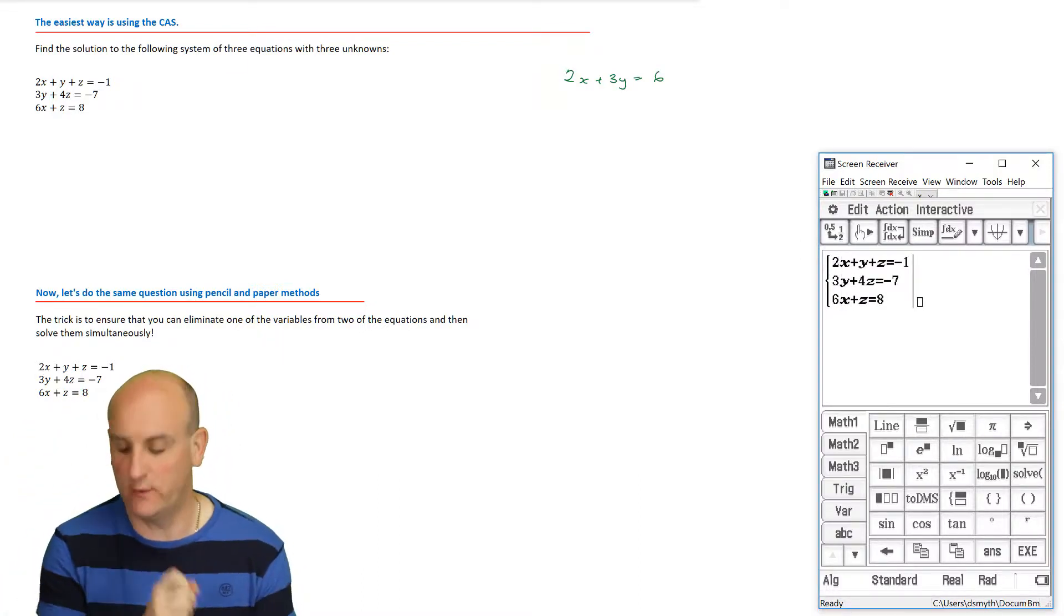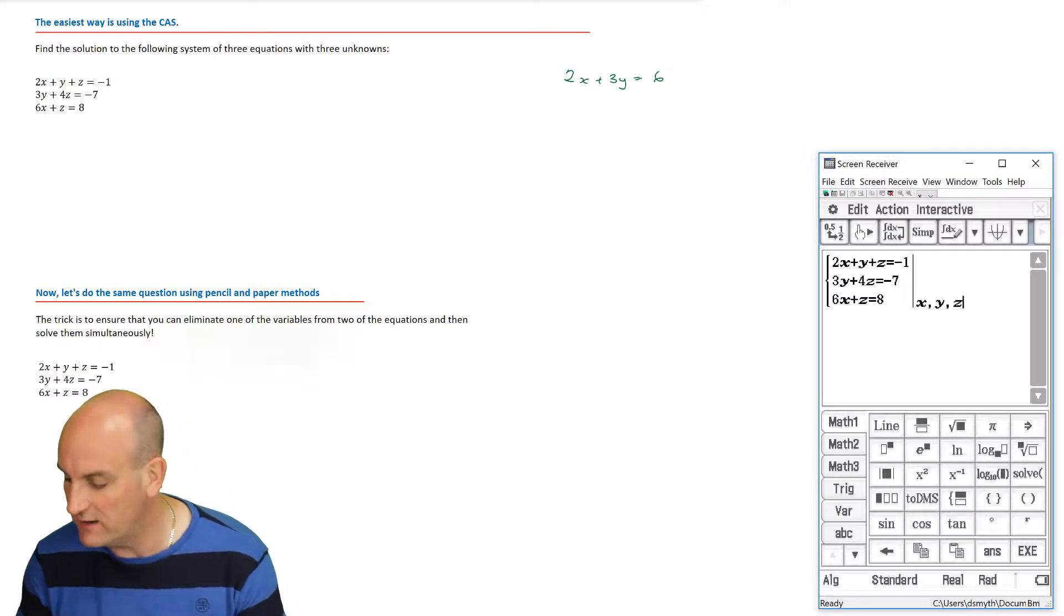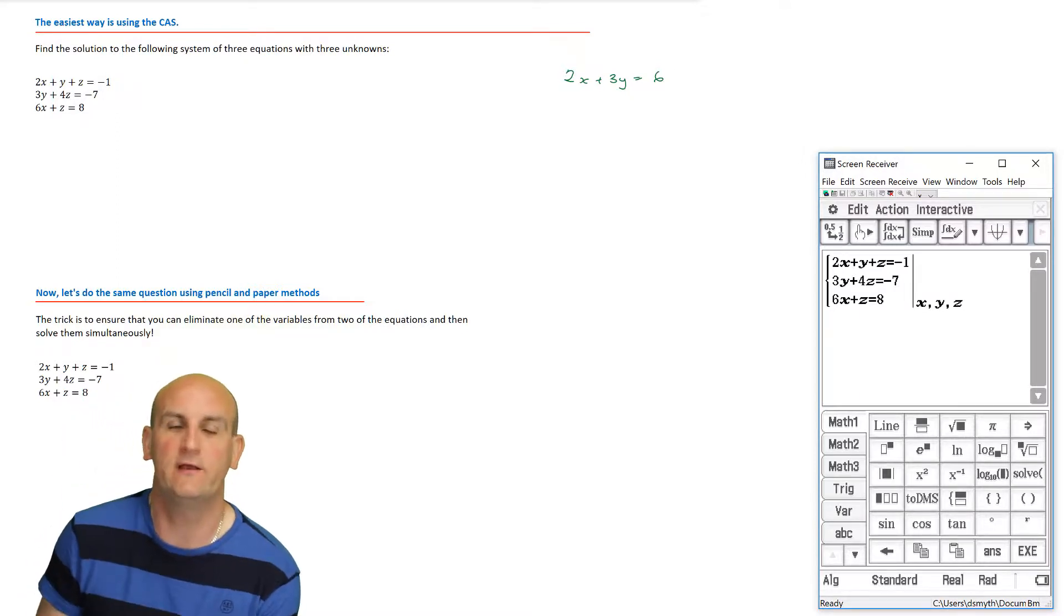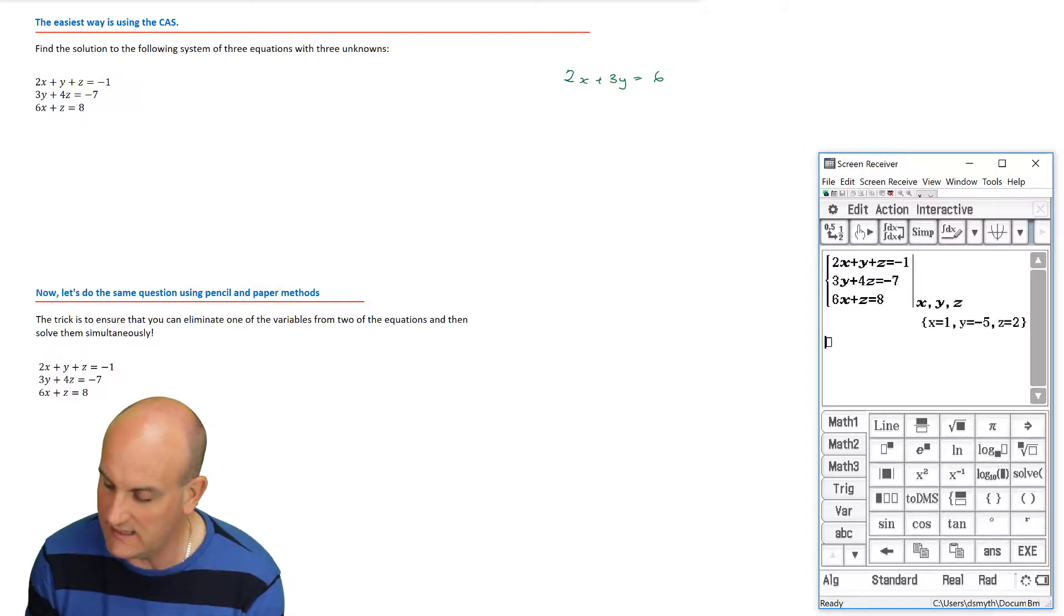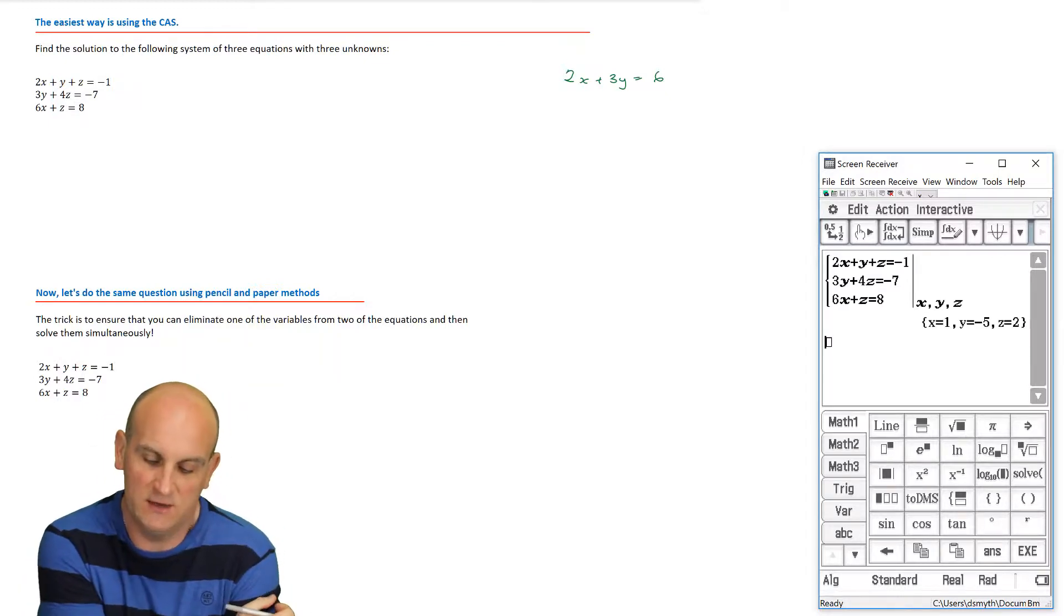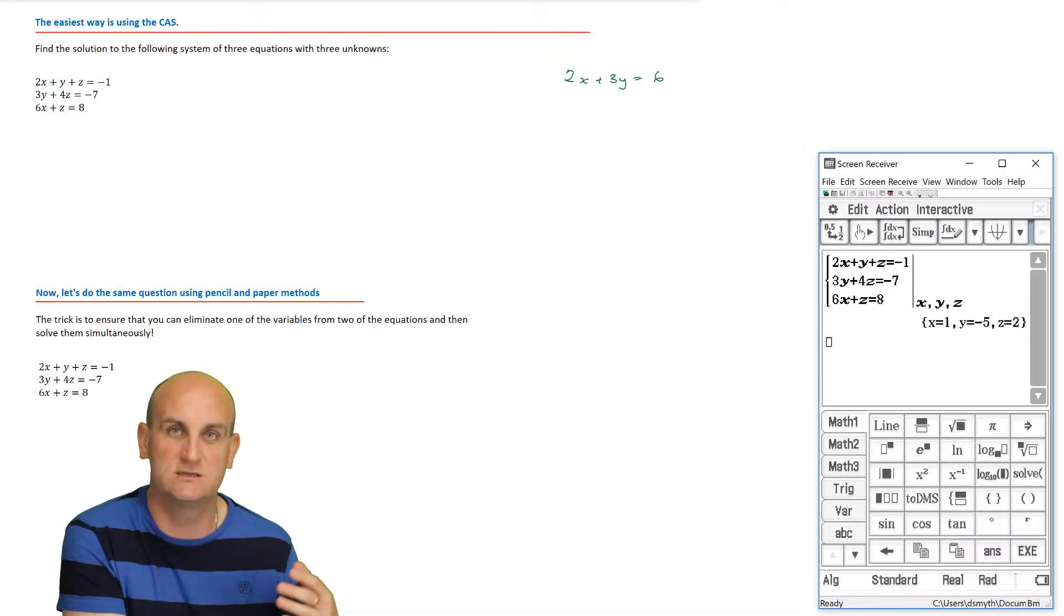Loading up my CAS calculator I'm going to hit main and edit clear all. I'm going to hit keyboard and this button. In this situation I'm going to hit it twice which will set up those three equations for me. I've entered my three equations in and the key point here is to solve it for three variables so x comma y comma z. When I hit enter, out comes those amazing values of x equals 1, y equals negative 5, and z equals 2.